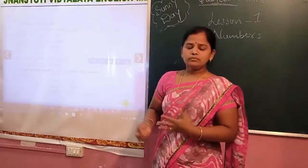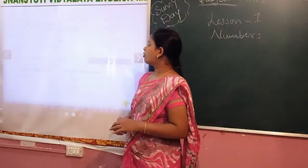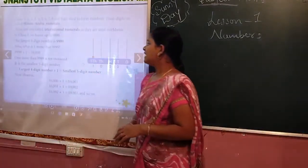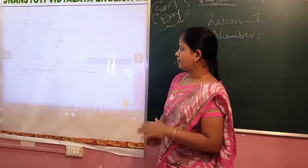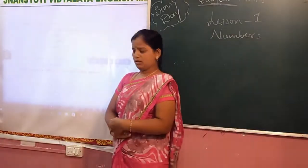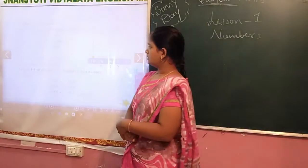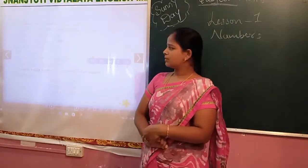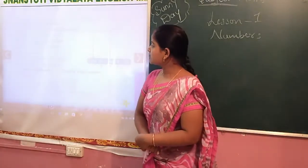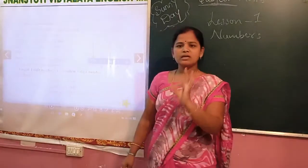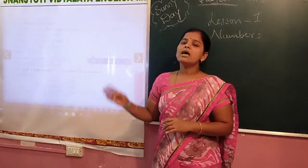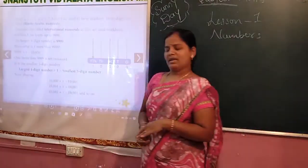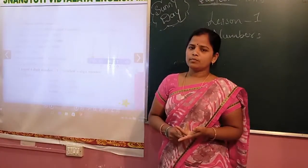Let us start learning about 5-digit numbers. In the previous class, we learned up to 9,999. The largest 4-digit number is 9,999. Now, if it is one more than that — what happens if we add 1 to 9,999?